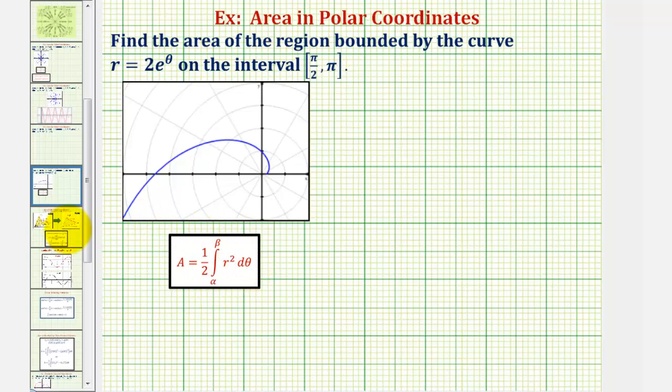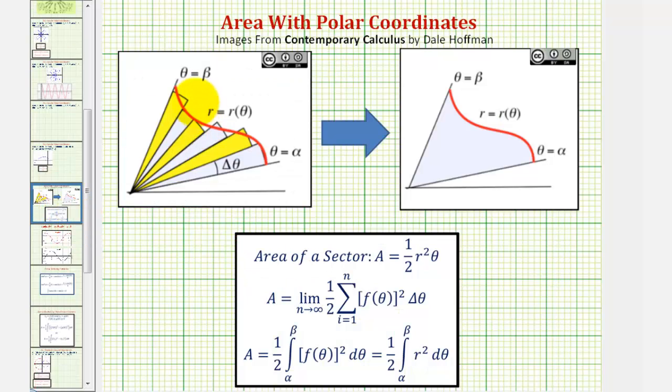This formula comes from first approximating the area bounded by the polar curve using circular sectors as we see here.